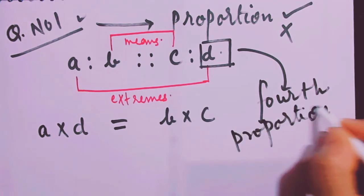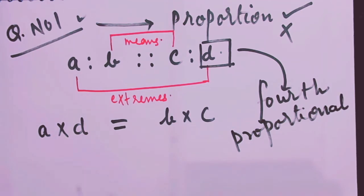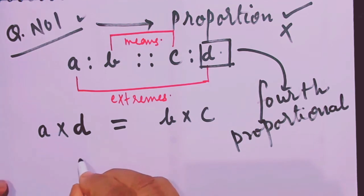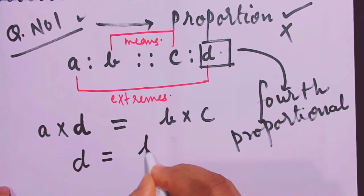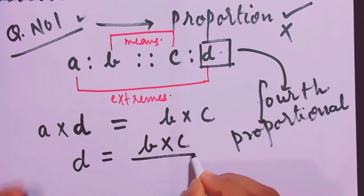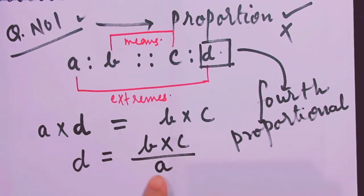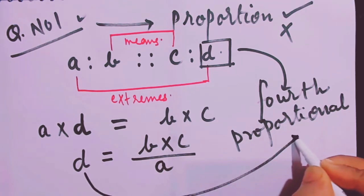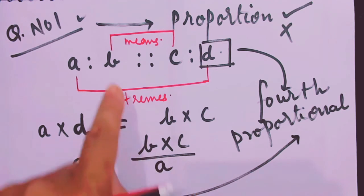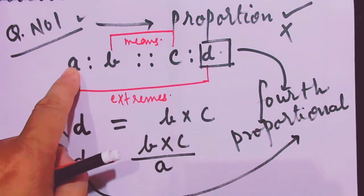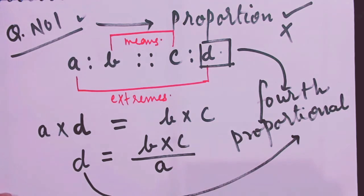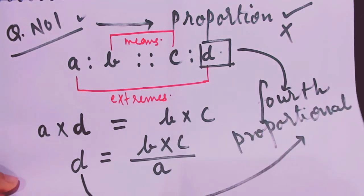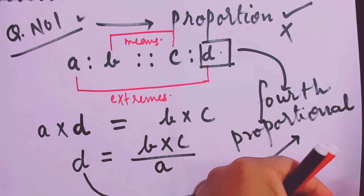If D is not given, you can find it by dividing B into C by A — that is, when you transpose A to the other side, it gets divided. Therefore, you can find the fourth proportional by multiplying the means and dividing by one of the extremes. We shall use the same formula in question number two.